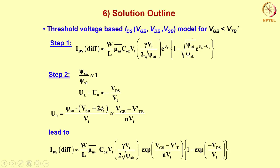Substituting these results: uL − u0 = −Vds/Vt is put in, and the exponential of u0 becomes exp((Vgs − V'Tb)/(nVt)). Since both voltages were originally with respect to bulk, we take them with respect to source as the common reference point — this gives Vgs. The threshold voltage without a suffix is the one normally referenced to source.